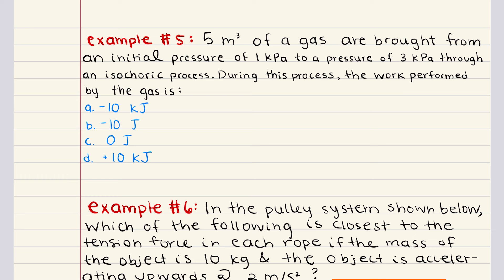Work in thermodynamics is often calculated as pressure multiplied by delta V, where delta V is the change in volume. However, in an isochoric process, delta V equals zero because the volume doesn't change. Therefore, work equals pressure times zero, so work equals zero joules. No work is done in an isochoric process because there is no change in volume, regardless of the change in pressure. The gas performs no work on the surroundings, nor does the surroundings perform work on the gas. So the correct answer is C.